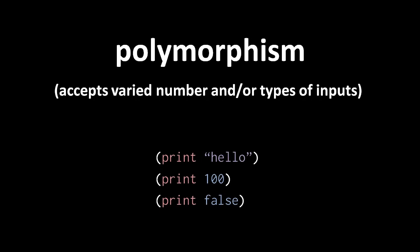In programming, the term polymorphism refers to the ability of an operation or function to accept a varied number of inputs and or varied types of inputs, and possibly change its behavior in these different cases.